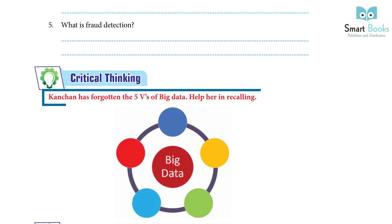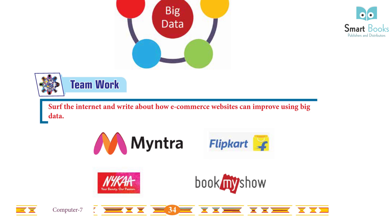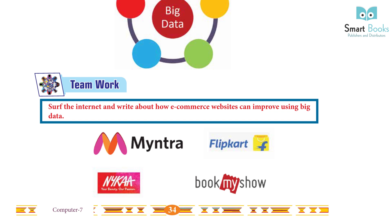Critical thinking: A student has forgotten the five V's of big data — help her in recalling them. Answer: Ask students to do it by themselves. Team work: Search the internet and write about how e-commerce websites can improve using big data. Answer: Ask students to do it by themselves.